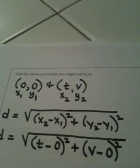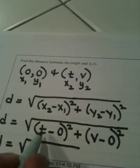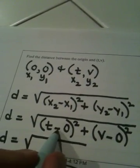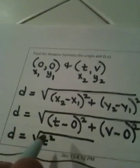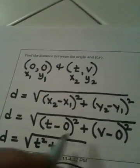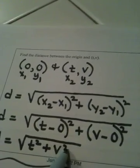This is all under a radical. We have the square root of t minus 0 is t. T squared is just that. There's a plus in the middle. v minus 0 is v. v squared is v squared.